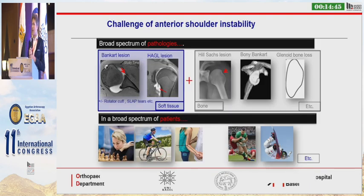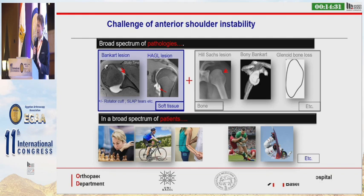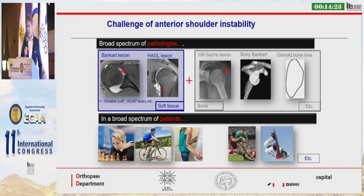I think the main challenge in anterior shoulder instability is the fact that it's triggered by multiple different lesions within the soft tissues and the bony structures that stabilize the glenohumeral joint, and these lesions occur in a broad spectrum of different patients. Depending on the gender, age, activity, hyperlaxity, and sports activity of the patient, each patient might have a different recurrence rate following a stabilization procedure.